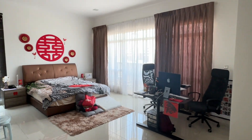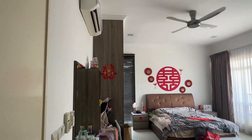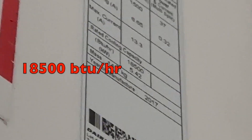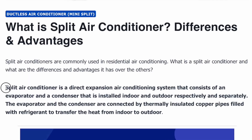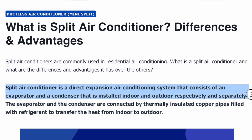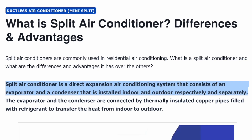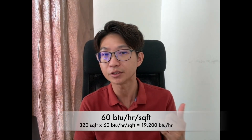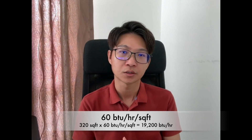I moved to this room over a year now. This is a 320 square feet bedroom with an 18,500 BTU per hour air conditioner. The type of the air conditioner is known as a split air conditioner, or mini split if you are from the US. When we were renovating this house 6 years ago, I sized this air conditioner based on 60 BTU per hour per square feet.